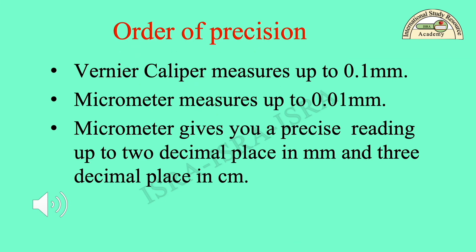Order of precision: Vernier caliper measures up to 0.1 mm. Micrometer measures up to 0.01 mm. The micrometer gives you a precise reading up to two decimal places in mm and three decimal places in cm.